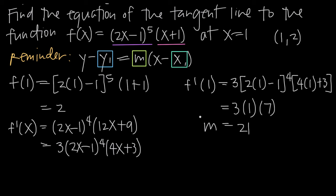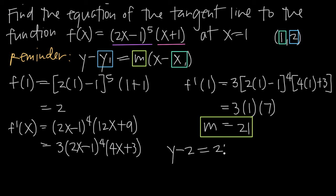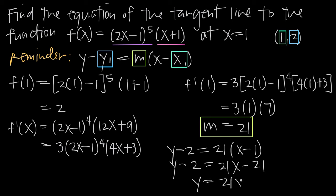Now we have m equals 21, x sub 1 equals 1, and y sub 1 equals 2. Plugging into the point-slope formula: y minus 2 equals 21 times the quantity x minus 1. Distributing the 21 gives y minus 2 equals 21x minus 21. Adding 2 to both sides, we get y equals 21x minus 19. This is the equation of the tangent line to the original function f of x at the point x equals 1.